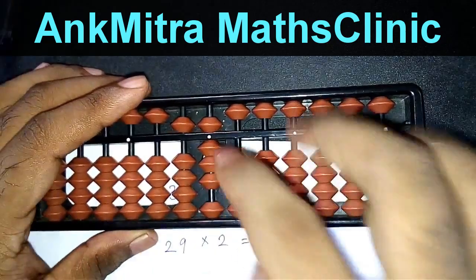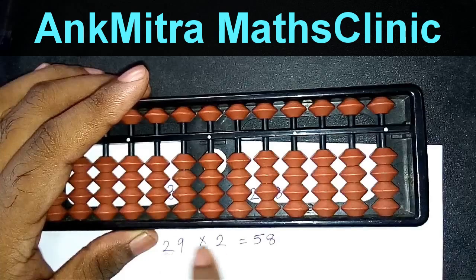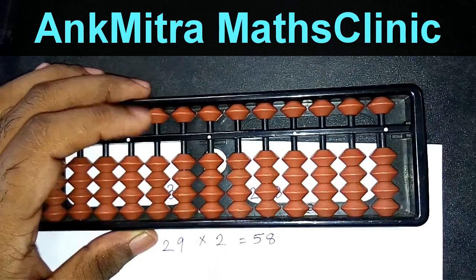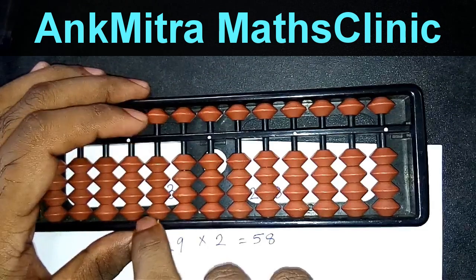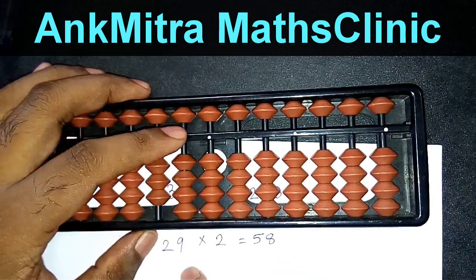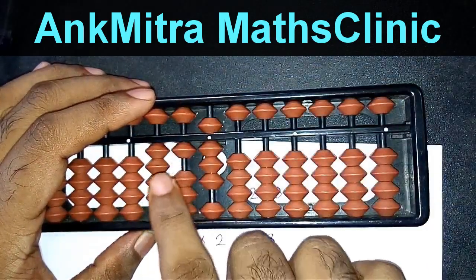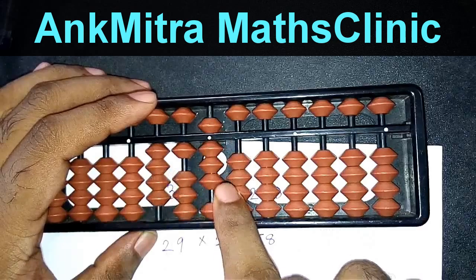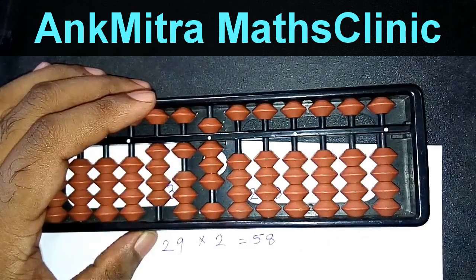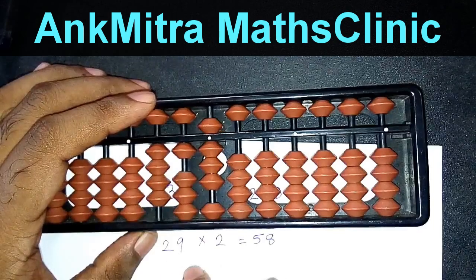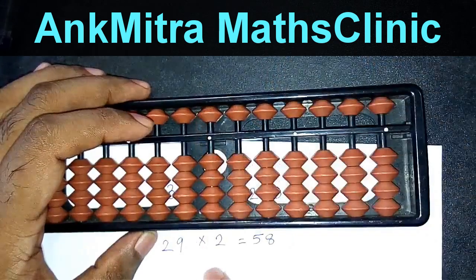Just in case, if somebody doesn't use the two-digit number for the table of 2 twos are 04, suppose he uses only 2 twos are 4, then he'll start on the third rod with 4. And then on the second rod, we'll add 9 twos are 18 directly. So the answer that the student will get is 418, which is a wrong answer. So this is the importance of using a two-digit answer for any table recitation. So 2 twos are will be used as 04 and not just 4.